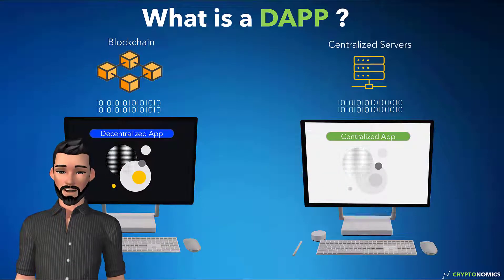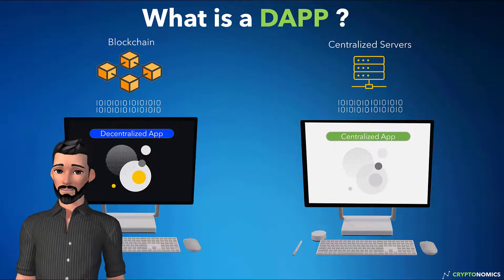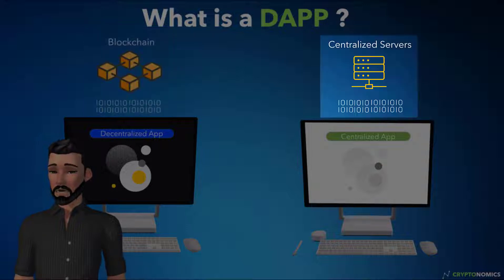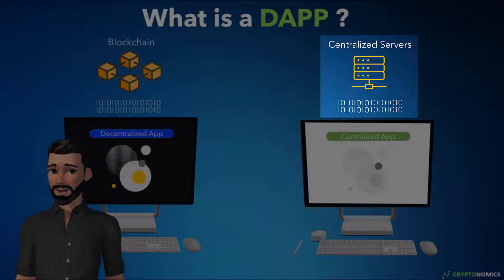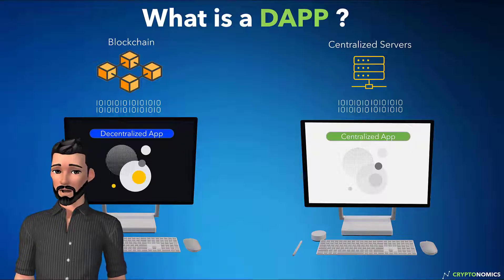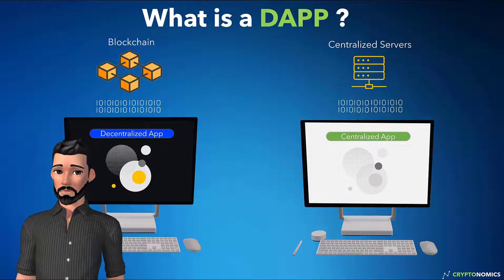A decentralized app has its backend code running on a decentralized peer-to-peer network. Contrast this with a traditional application, where the backend code is run in centralized servers. A DAP can have front-end code and user interfaces written in any language, just like a traditional application, to make calls to its backend.